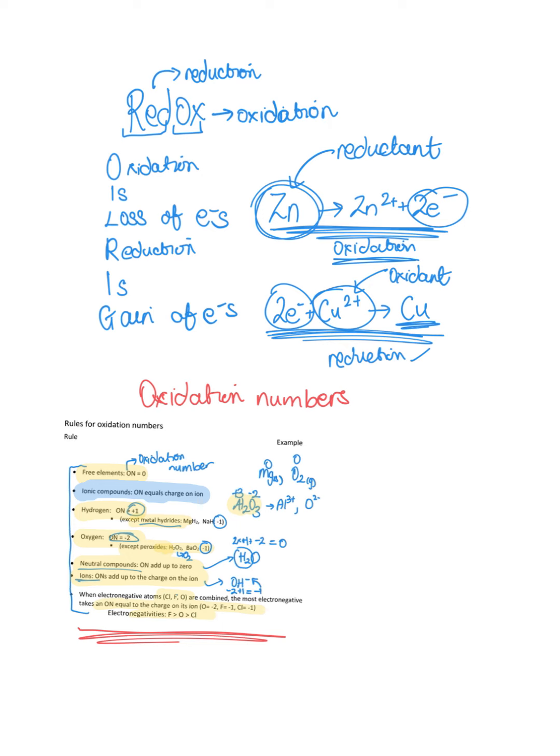And in ions, the oxidation number add up to the charge of the ion. And just remember when we've got our electronegative atoms, so atoms that really want to get electrons, the oxidation numbers go in order to the charge on the ions, which is as written here.